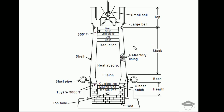We also have a blast pipe, whose function is to supply very hot preheated air in order to enhance the combustion process. Then we have a tyre — in some furnaces we find a tyre and in some we don't. The tyre helps in adding additional components like phosphorus, tungsten, or carbon, supplied along with the preheated air. At the very bottom we have the bed, which provides complete structural support and takes the entire load of the furnace and its components.